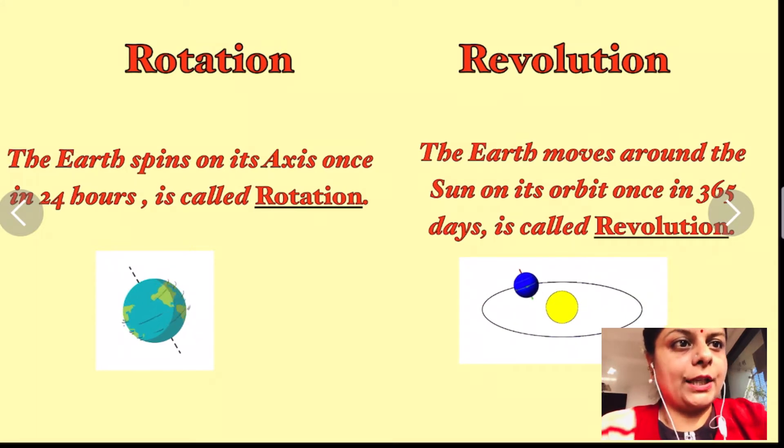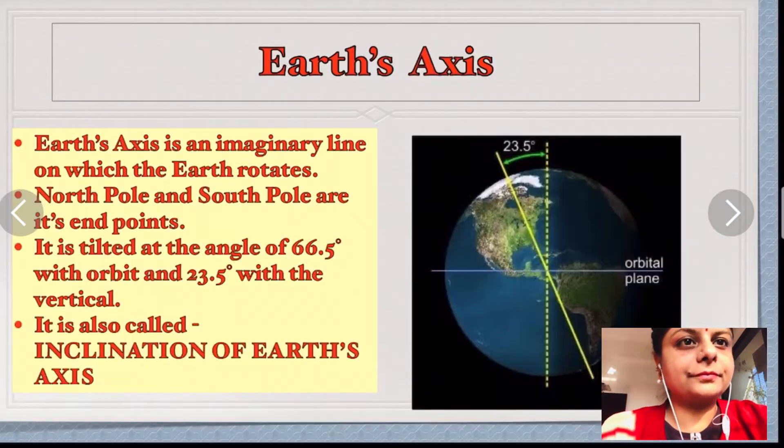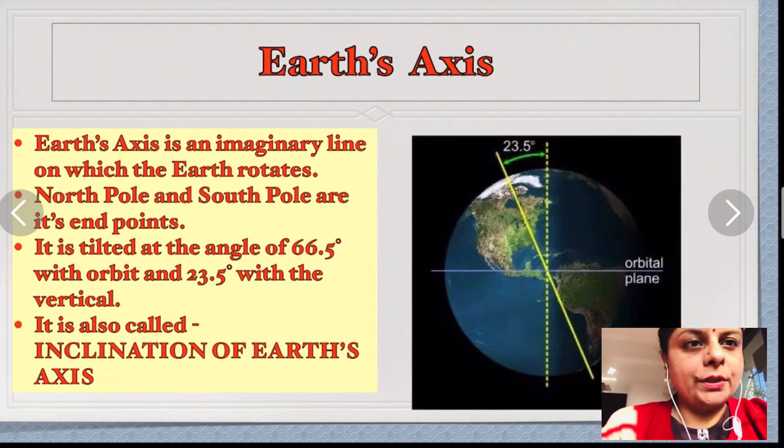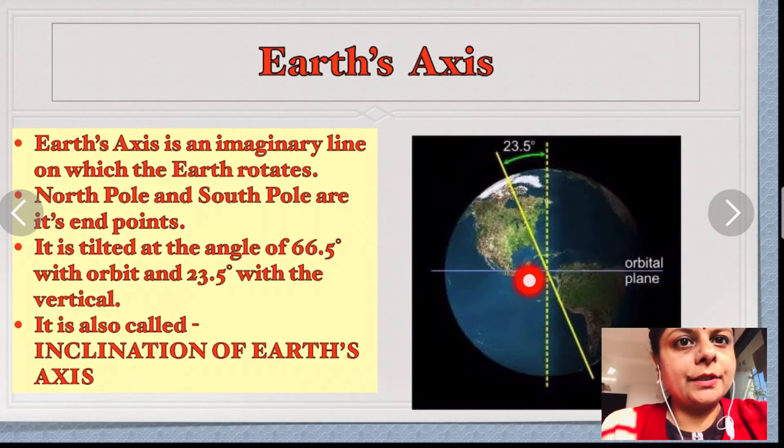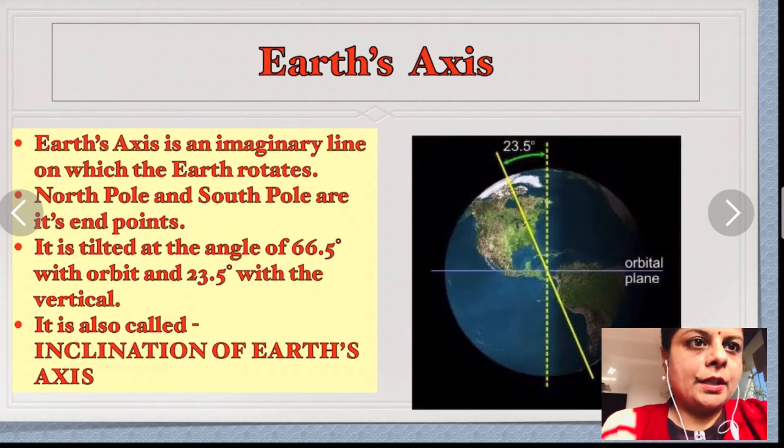Earth's axis is an imaginary line, you can see here, on which the Earth rotates counterclockwise. The northern end is known as North Pole and the southern end is known as South Pole.